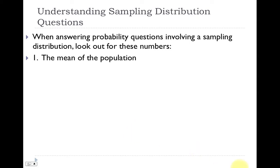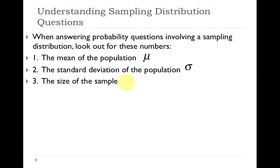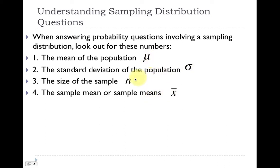When working with a sampling distribution, you want to look for four items when reading probability questions. The word problem has to provide you with the mean of the population (mu) and the standard deviation of the population (sigma). We're also going to be given the size of the sample, denoted by n, and the sample mean or sample means, which is x-bar. We have to be provided with these four things to answer a question regarding probability and sampling distributions.